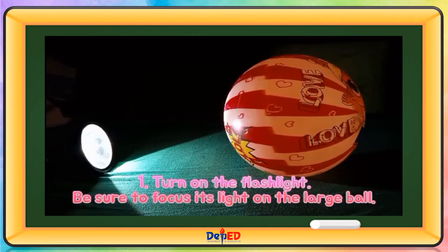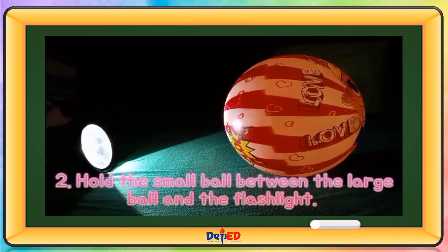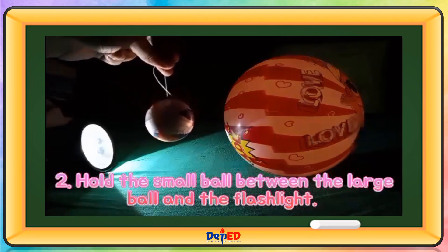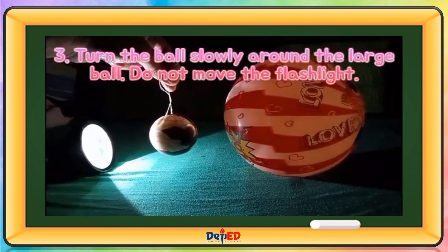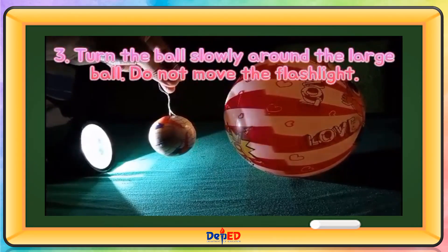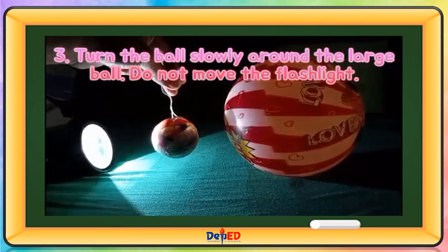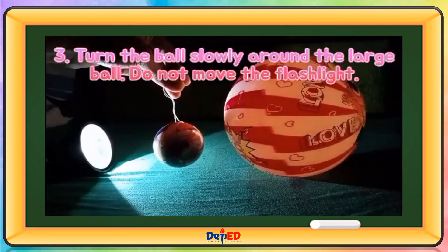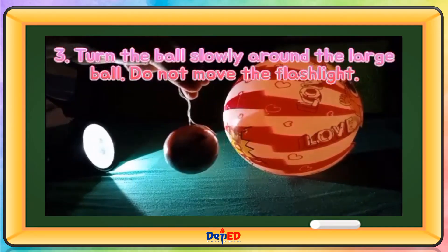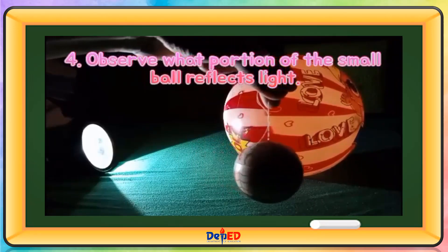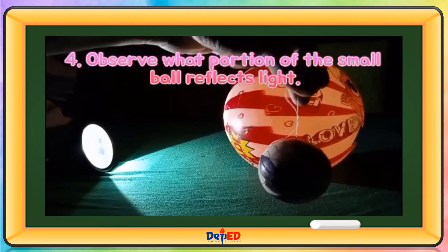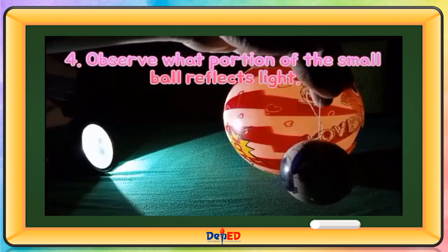Hold the small ball between the large ball and the flashlight. Turn the ball slowly around the large ball. Do not move the flashlight. Observe what portion of the small ball reflects light.